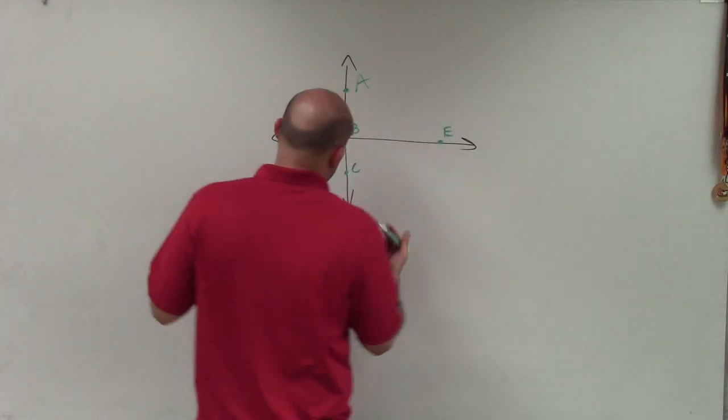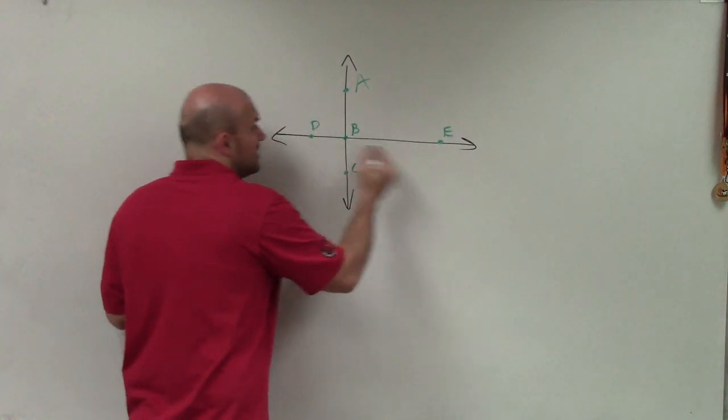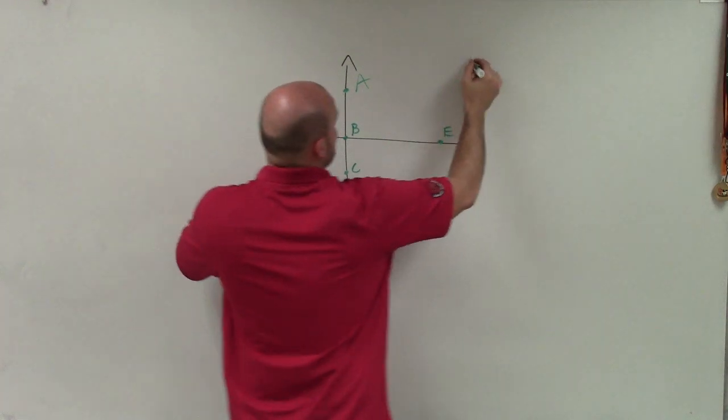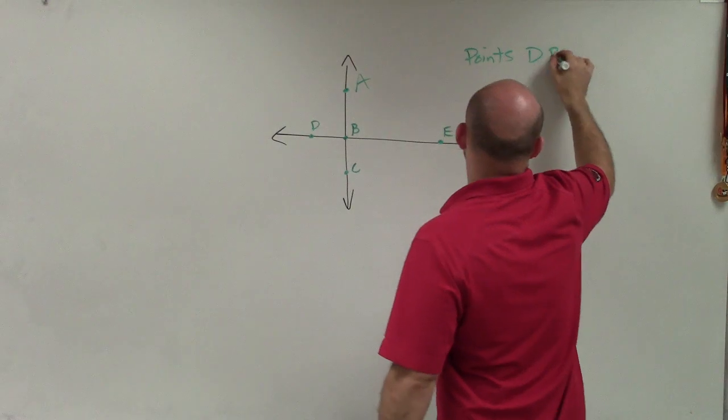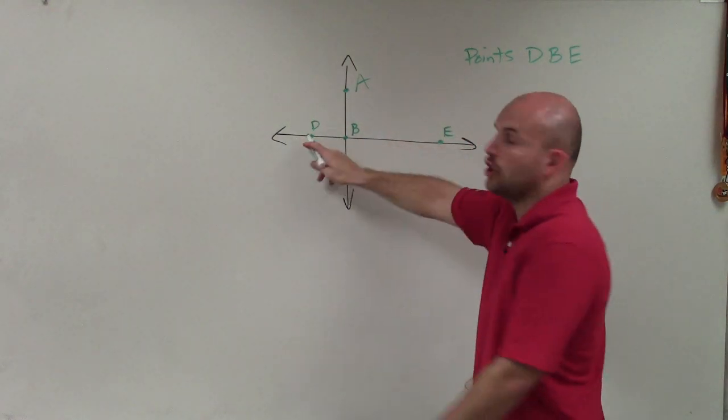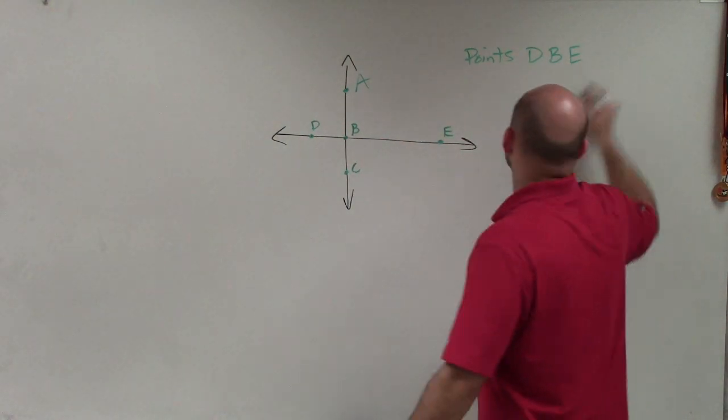So what we want to do is look at points that are on a line. We could say that points D, B, and E are all collinear. They all lie on the same line.